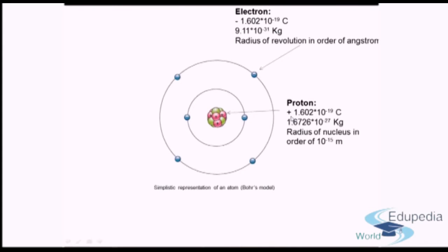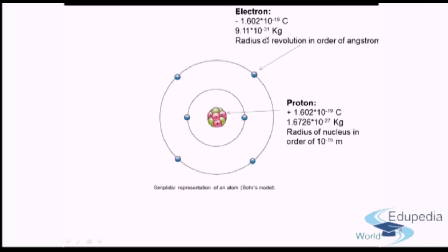Similar to the charge of the electron, which was −1.602 × 10⁻¹⁹ coulombs, protons have the same magnitude but are oppositely charged — that is, positively charged. The key difference is mass: the mass of the electron was on the order of 10⁻³¹ kg, whereas the mass of the proton is on the order of 10⁻²⁷ kg — four orders of magnitude different. So a proton is much heavier than an electron.